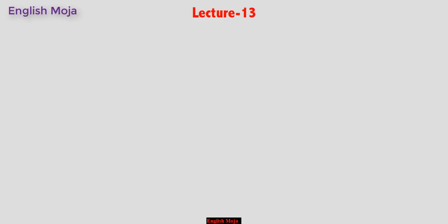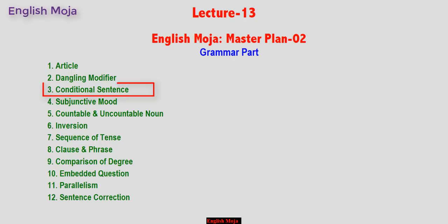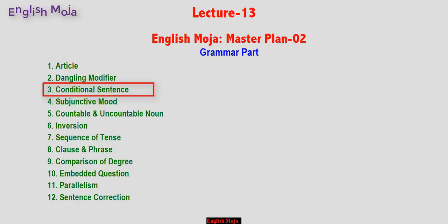In today's English Mojo class, we will be covering the admission test topic. In this class, I will be covering lesson 13, Master Plan 2 and 3. The first topic is conditional sentences, which is very important for the admission test. There are questions in the pattern — right form, completing sentence, fill in the gap, and choose the correct answer from 4 options.